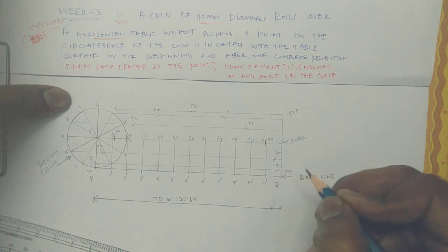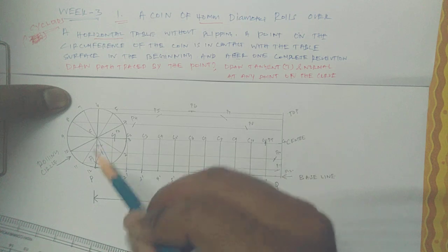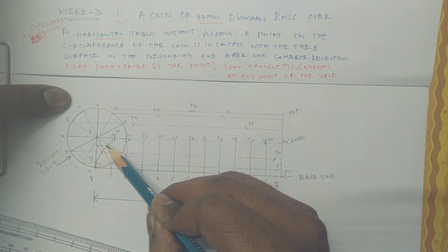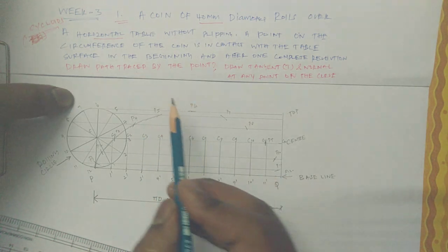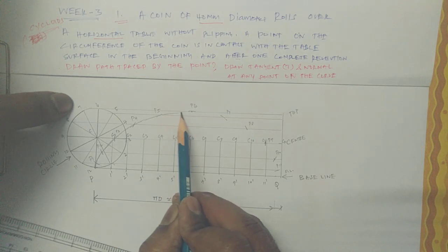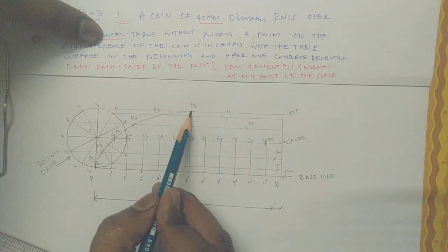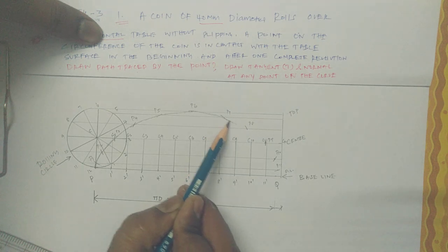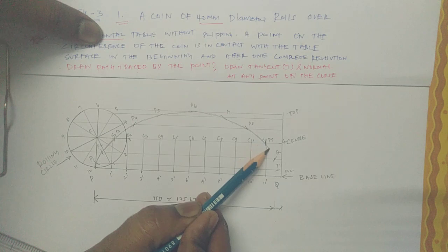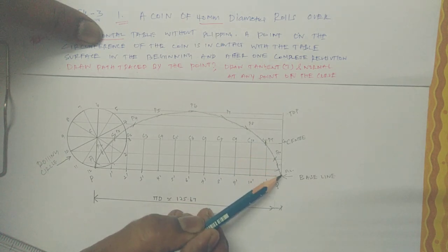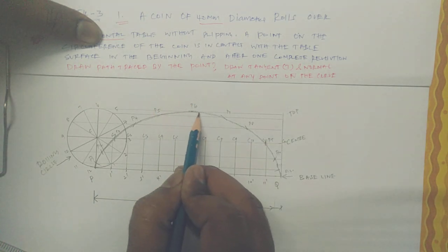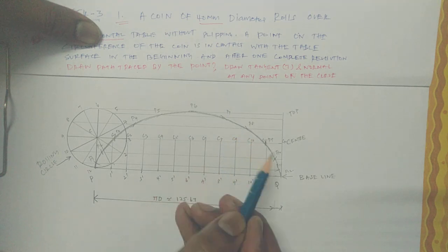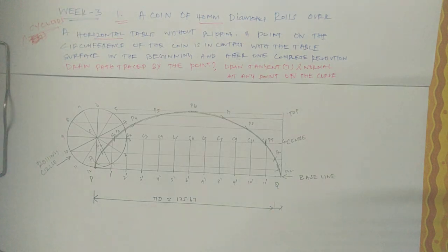Just connect by a smooth curve that will give you the path of the cycloid. Just make it a smooth curve, this is the cycloid profile.